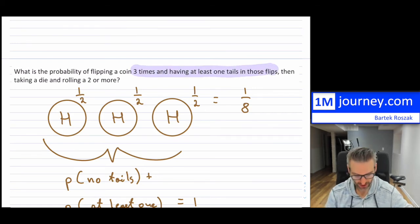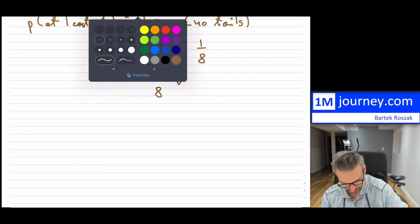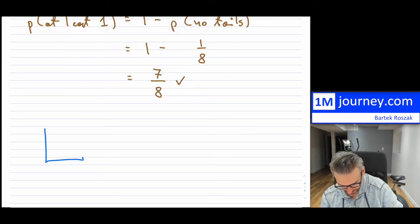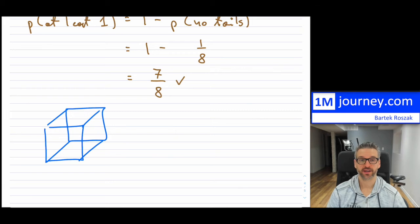Now, in the question, it also says then taking a die and rolling a two or more. So if we wanna take a die and then roll a two or more, so on our die that we have, let's put this in here. So it's a six-sided die, so a standard die that maybe we're rolling. If the question said that maybe it was an eight-sided or something else, then we would do it a little bit different. I'm gonna assume that this is just a standard die.